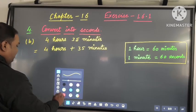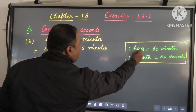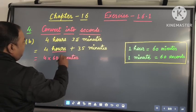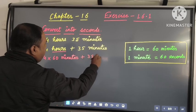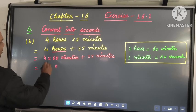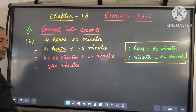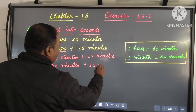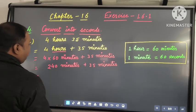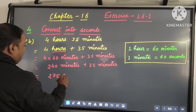This is in hours, so we will convert 4 hours into minutes. 1 hour is equal to 60 minutes, so 4 hours is equal to 4 multiplied by 60 minutes, plus 35 minutes. Multiplying: 4 times 60 gives 240 minutes. So 240 minutes plus 35 minutes: 0 plus 5 is 5, 4 plus 3 is 7, and then 2, giving us 275 minutes.